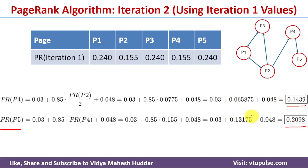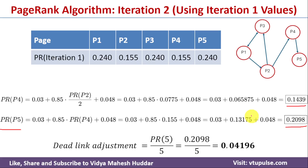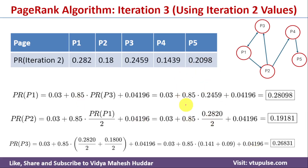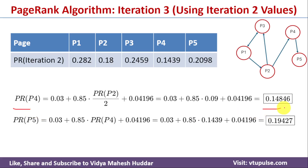For the third iteration, the dead link adjustment = PageRank(P5) / 5 = 0.2098 / 5 = 0.04196. Using the second iteration values, the third iteration results are: PageRank(P1) = 0.28098, PageRank(P2) = 0.19181, PageRank(P3) = 0.26831, PageRank(P4) = 0.14846, PageRank(P5) = 0.19427.